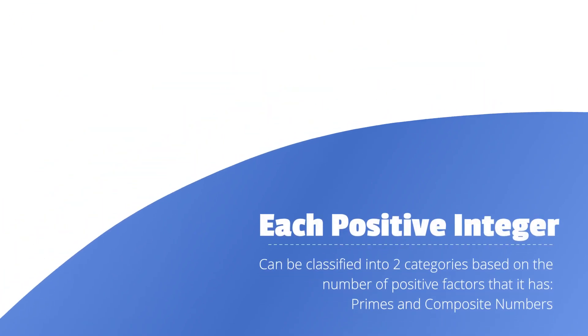Each positive integer can be classified into two categories based on the number of factors that it has: primes or composite numbers.